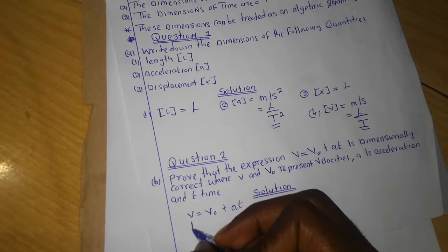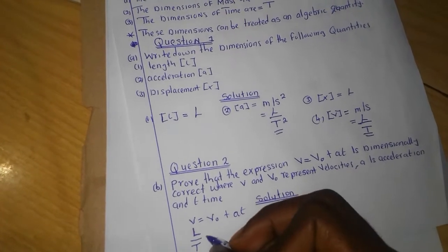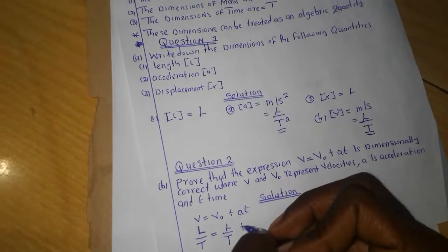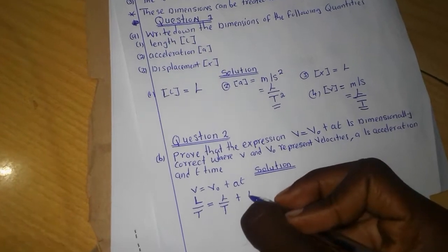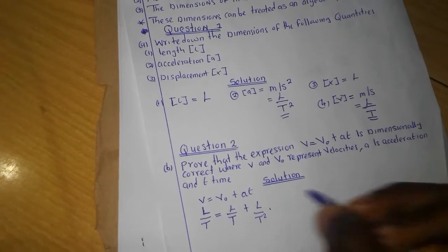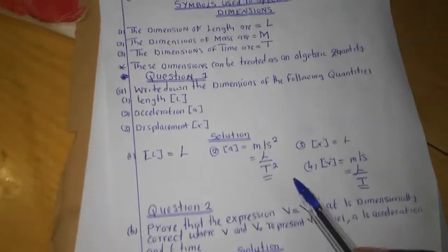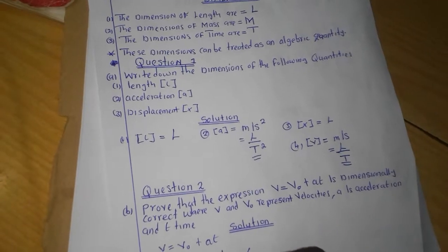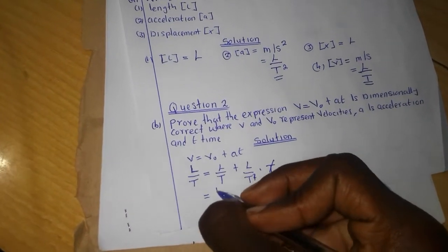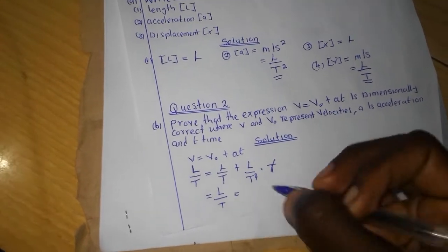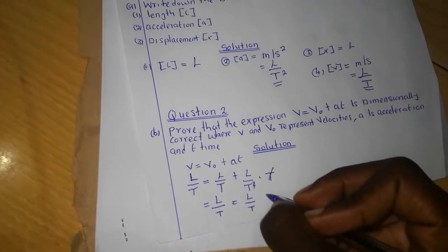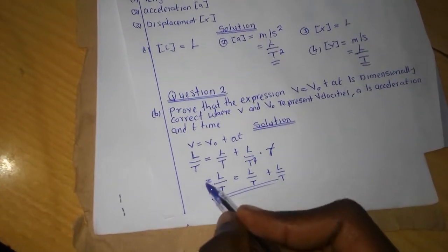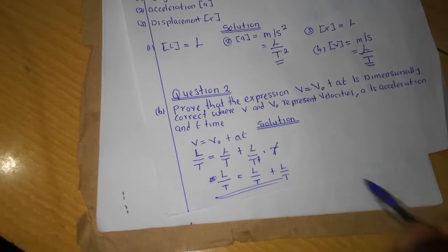We have V equal to V-naught plus A times T. The dimensions of V are simply L over T. The dimensions of V-naught are also L over T. The dimensions of acceleration are L over T squared, and the dimensions of time are simply big letter T. That T and T squared can cancel, leaving L over T. Therefore: L over T equals L over T plus L over T.